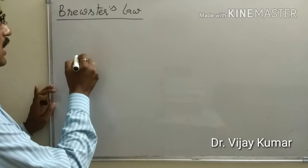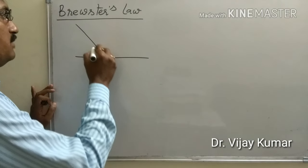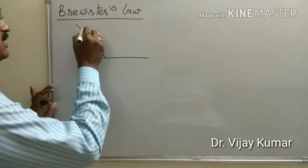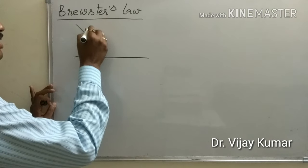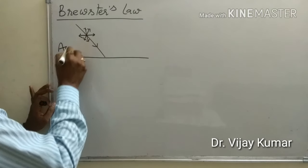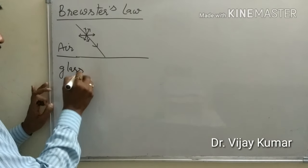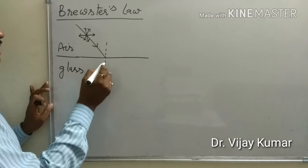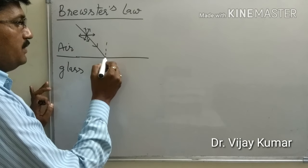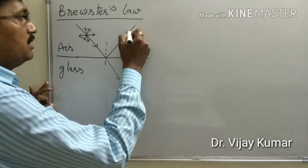If an unpolarized light is incident on the surface of glass, this is unpolarized light, air and glass. Then some parts of the light ray is refracted and some part is reflected.